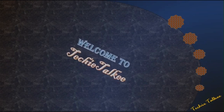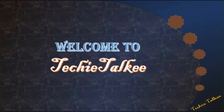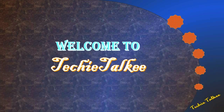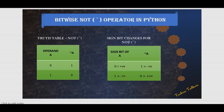Welcome to Techie Talkie. Hello friends. In this video, I am going to explain about the bitwise NOT operator. It is represented by using the tilde symbol. The bitwise NOT operator reverses both the binary value and the sign bit.